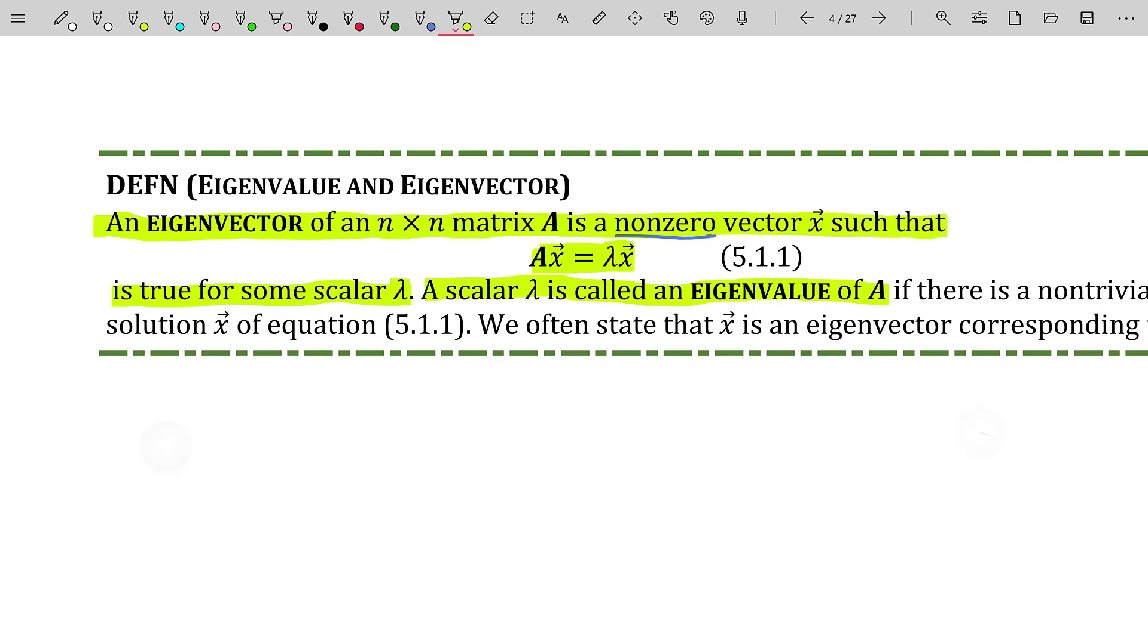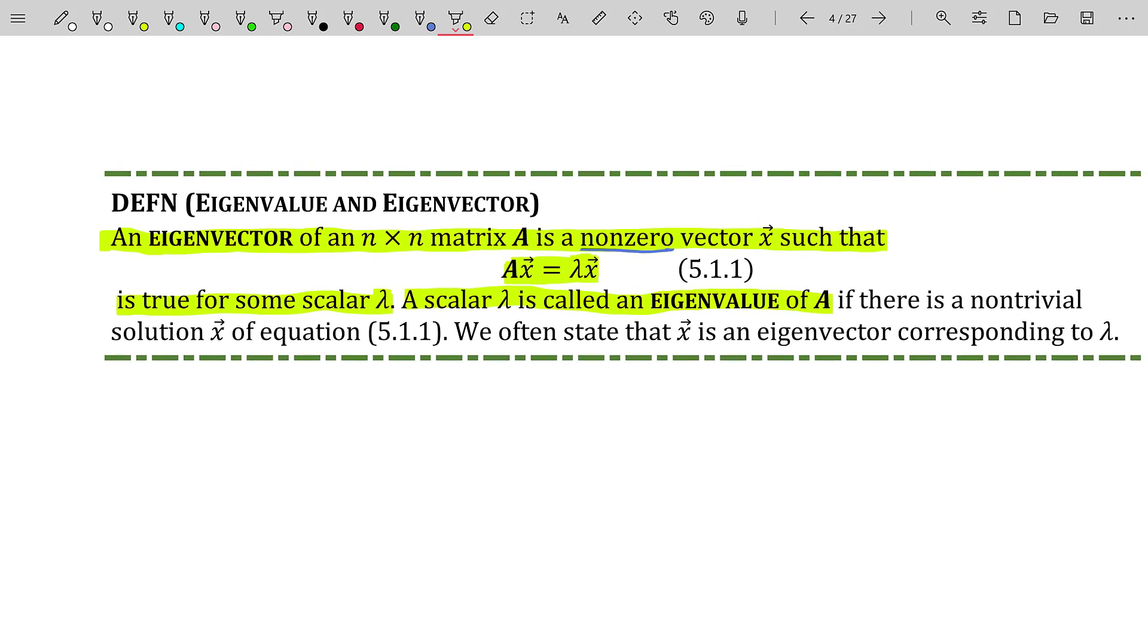And if I'm actually going to read this sentence properly, I would say a scalar lambda is called an eigenvalue of A if there is a non-trivial solution x of that equation. Basically, that's a fancy way of saying, hey, if I got a vector that multiplies against my matrix and the result is a scaled version of that original vector, that vector is going to be called an eigenvector. And that scaling factor is going to be called the eigenvalue associated with that eigenvector. And as you can see, we often state that x is an eigenvector corresponding to that eigenvalue lambda. There's a lot of language that you kind of have to get used to when you start this conversation about eigenvalues and eigenvectors.